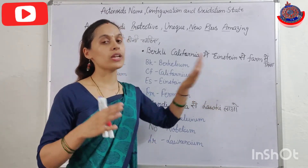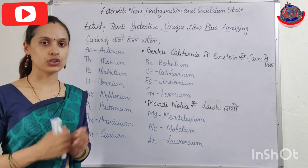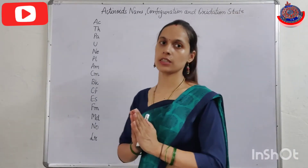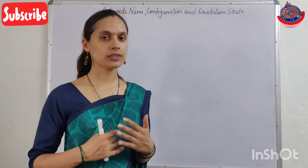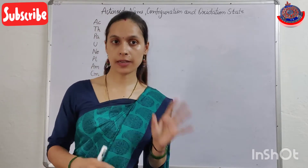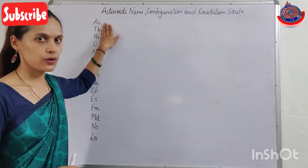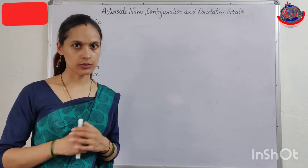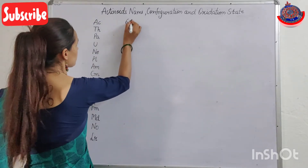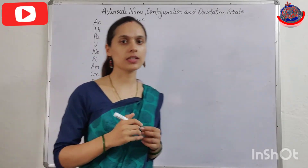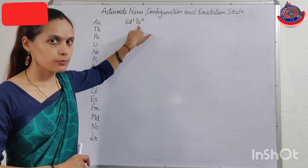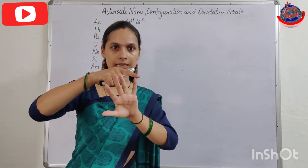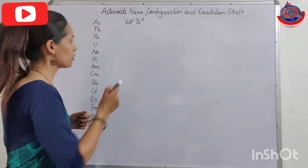Now we will learn how we can easily write the electronic configuration of different actinoids. If I talk about the configuration — just like in the lanthanoid video I told you to skip number 1 — here also you have to skip number 1. Now Actinium is a d-block element, present in the 6th group, 7th period. So its electronic configuration is 6d1, 7s2. Since it is in the 7th period, the noble gas that comes before it is from the 6th period — that is Radon (Rn).